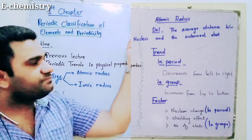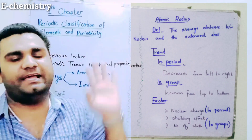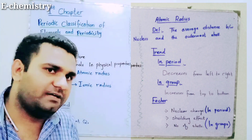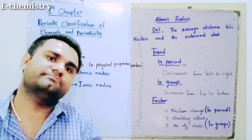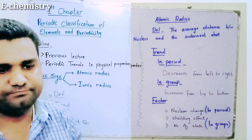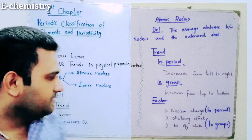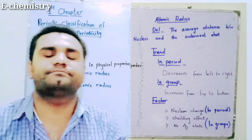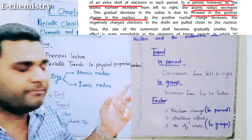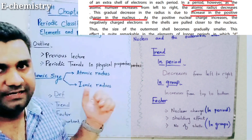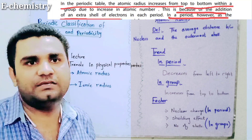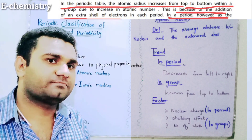The definition of atomic radius: the average distance between the nucleus and the outermost shell. The trend is: in a period, atomic radius decreases from left to right, and in a group, atomic radius increases from top to bottom.